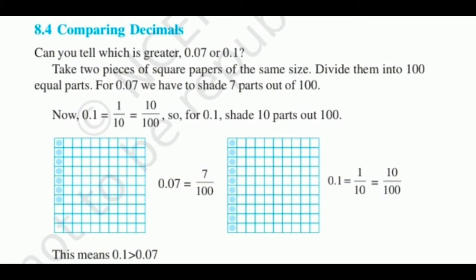In the next part, 0.1 can be shaded like this. So 7 parts of a hundred are shaded here, and here 10 parts out of 100 are shaded. This means 0.1 is greater than 0.07.